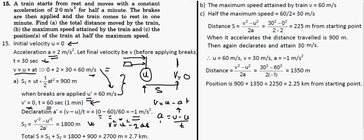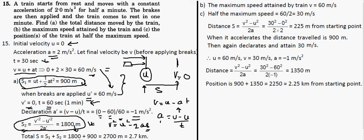To find the distance after brakes are applied, we use v² = u² - 2as. Solving for s gives us s2 = 1800 meters. The earlier distance s1, when the train was accelerating from rest with a = 2 m/s² for 30 seconds, using s = ut + ½at², gives s1 = 900 meters. So the overall total distance is 900 + 1800 = 2700 meters, which is 2.7 kilometers.